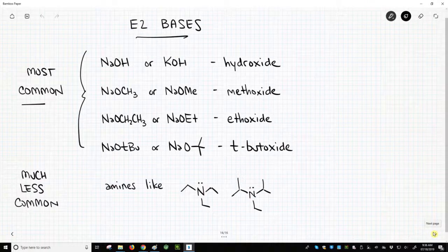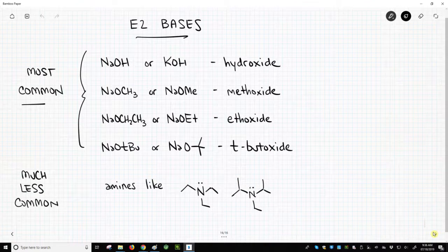So, to do an E2 reaction, the key idea is we need a base. And how do you identify a base? Well bases, they're going to remove protons, remove hydrogens.